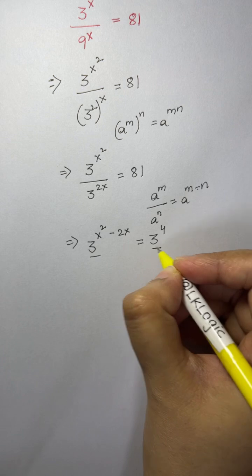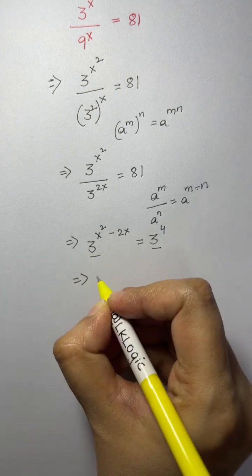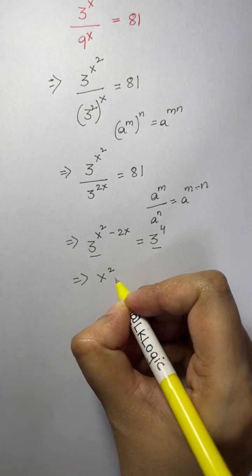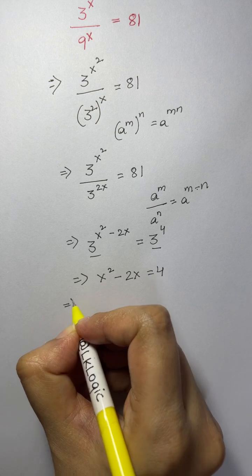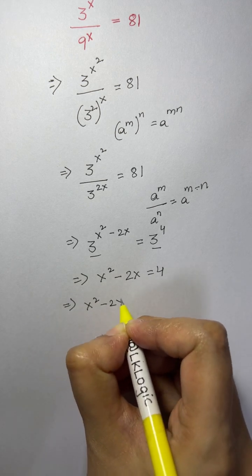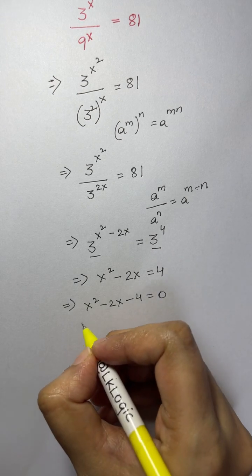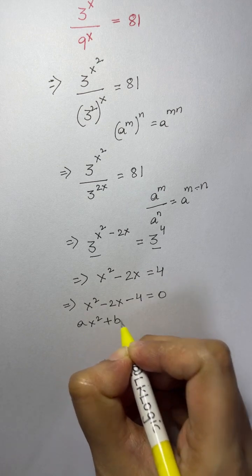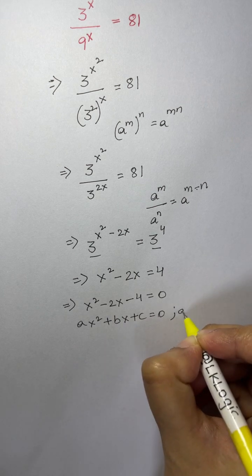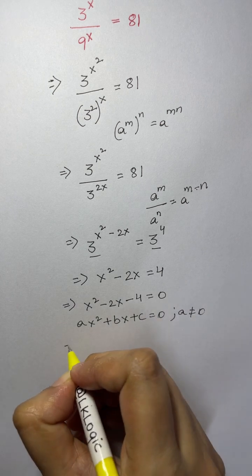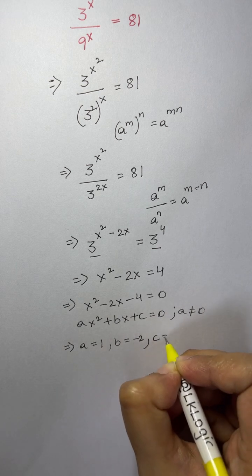Now we have the same bases on both sides, so we can equate the powers. We get x squared minus 2x equals 4. Bringing 4 to this side gives us the quadratic equation x squared minus 2x minus 4 equals 0. This is in the form ax squared plus bx plus c equals 0, where a is 1, b is negative 2, and c is negative 4.